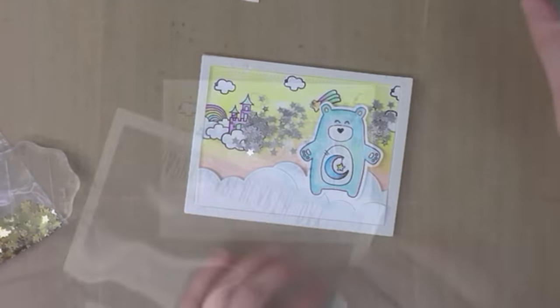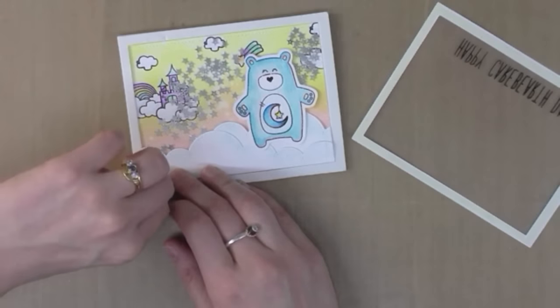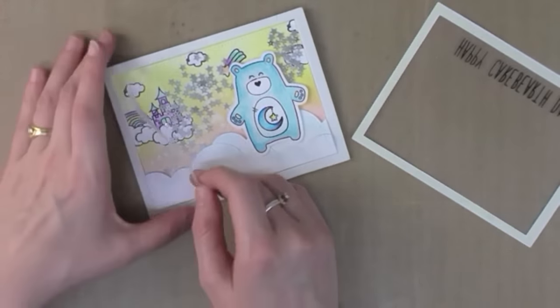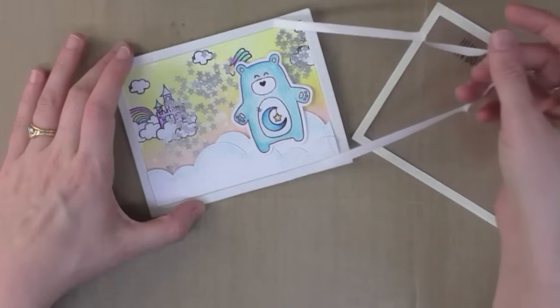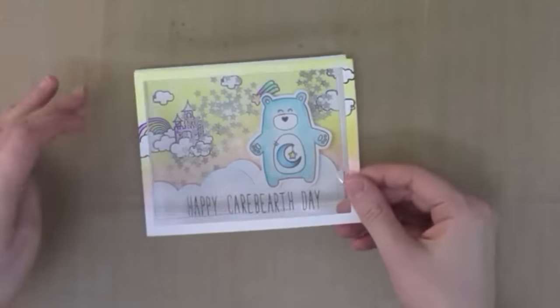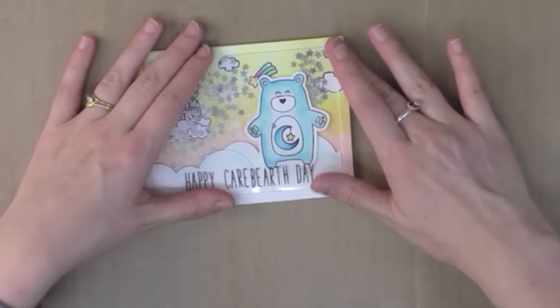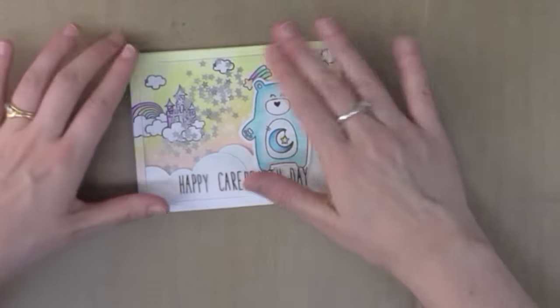Next up, adding my shaker bits, these are little stars. And all I need to do now is add the top of the card. Once I have my frame and the top panel in place, the shaker card is complete.